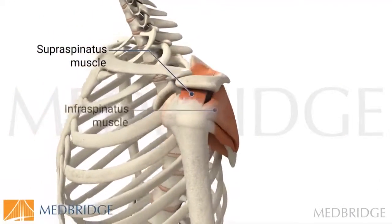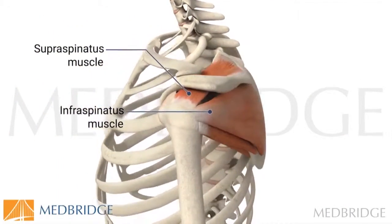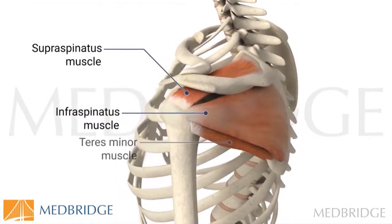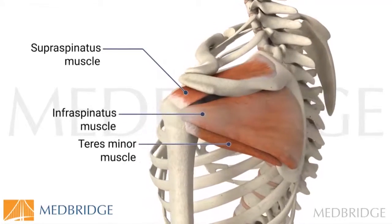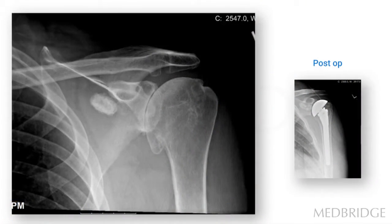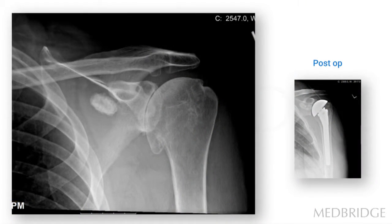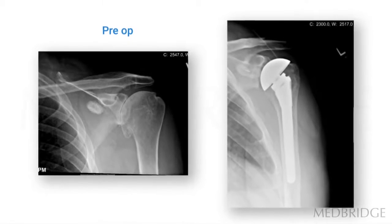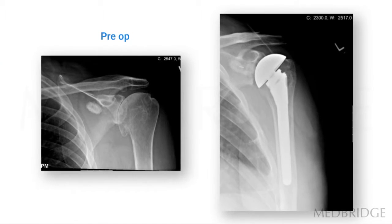This course concludes with an in-depth look at the indications for a reverse total shoulder arthroplasty surgery and the rehabilitation considerations specific to this procedure.